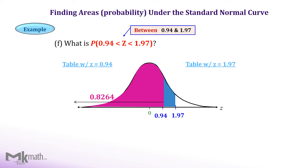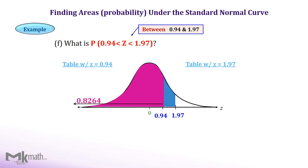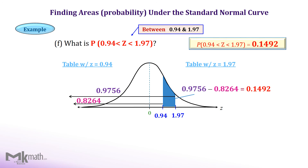Let's look up the table using 1.97 next. The intersection of 1.9 and the second decimal place of 7 from the top row gives the left cumulative area to z equal 1.97, which is 0.9756. This includes the area of 0.8264 corresponding to z equal 0.94. To find the between area, we subtract the smaller area corresponding to the smaller z-score from the larger area corresponding to the larger z-score. So the between area of z equal 0.94 and z equal 1.97 is 0.1492.